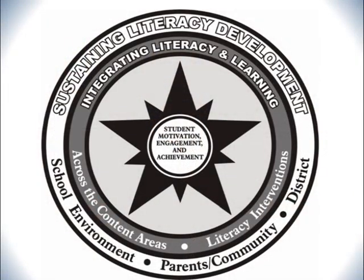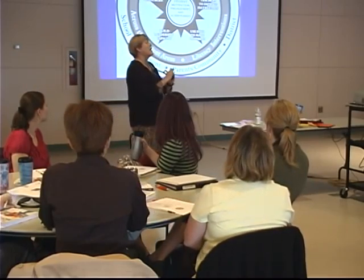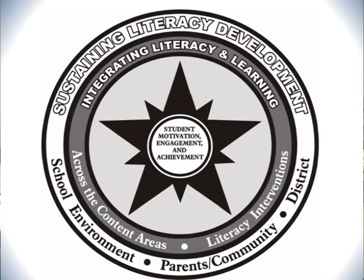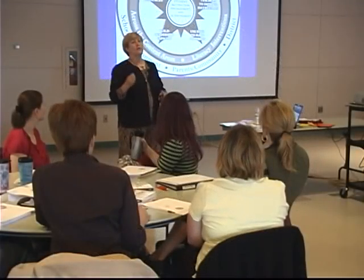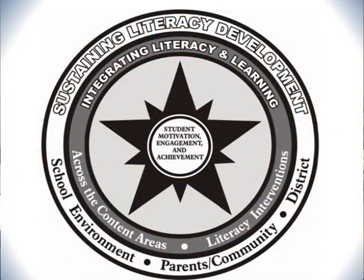This is the Taking Action Leadership Model. Think of the three circles as a bull's eye. Smack in the center is student motivation, engagement, and achievement — the focus of all our work. Around that is where literacy happens for kids: across the content areas and during literacy interventions, which are programs that serve struggling readers and writers. Around the outside, literacy is supported by a literacy-rich school environment, involvement with parents and community members, and support from the district-level office. Those are our six goal areas of the model.